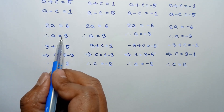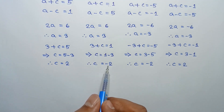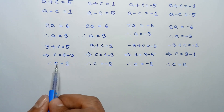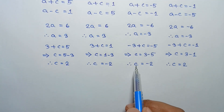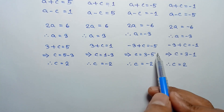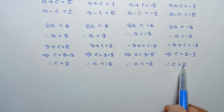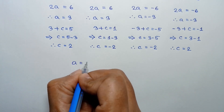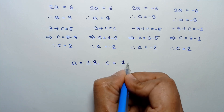So when a equals 3, c equals plus or minus 2, and when a equals negative 3, c equals negative 2 or positive 2. In general, the value of a is equal to plus or minus 3 and the value of c is equal to plus or minus 2.